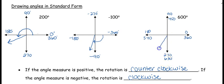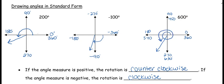We want to show our rotation, so we start at zero — but just drawing a line straight to the terminal side isn't right. It's a 600-degree angle. I did start at zero, but I had to go all the way around the circle and then come back. You need to show how many times you're spinning around the circle when graphing your angles in standard form.